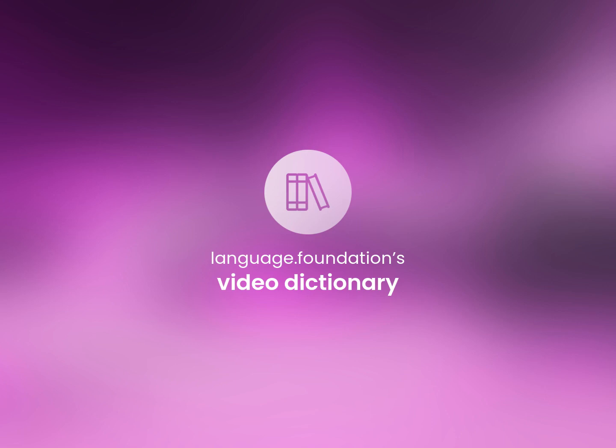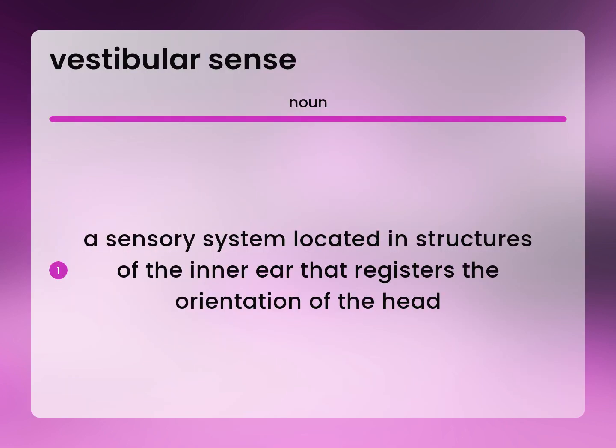Language.Foundation's Video Dictionary, helping you achieve understanding. A sensory system located in structures of the inner ear that registers the orientation of the head.